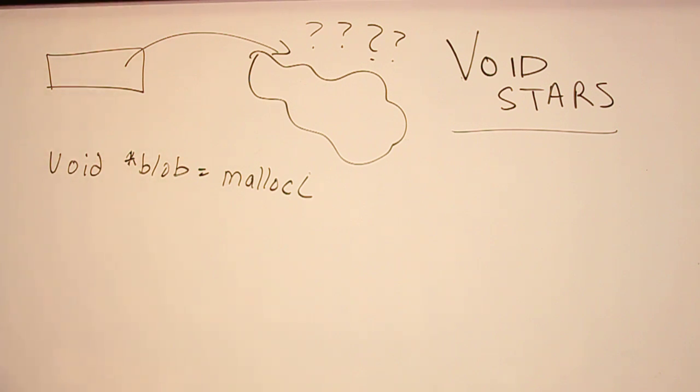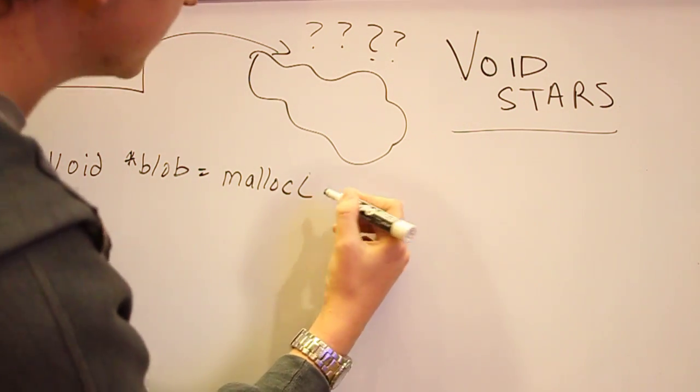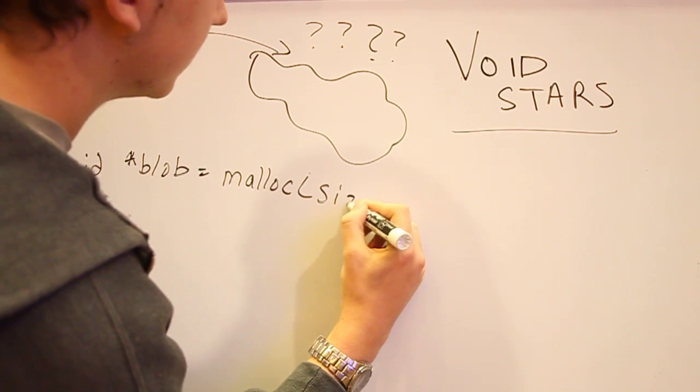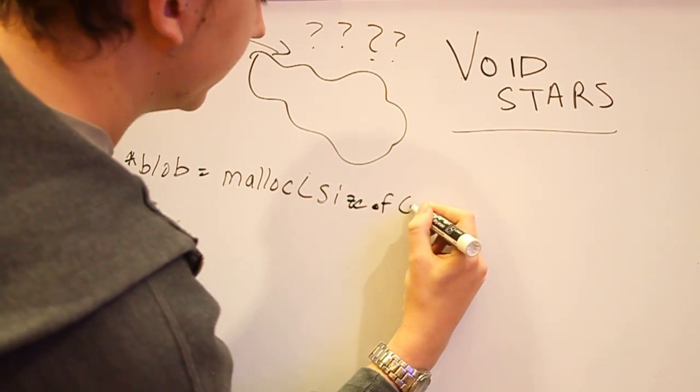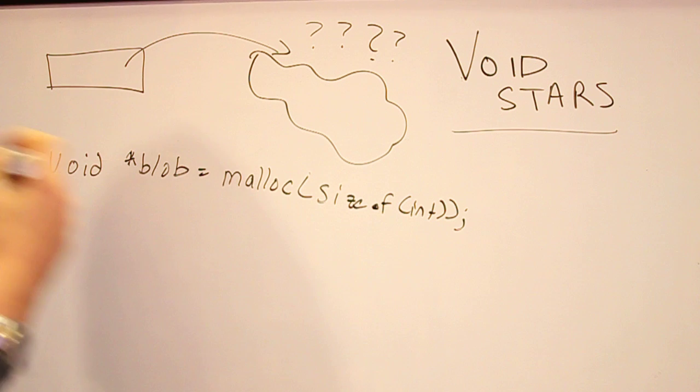This is similar to if you've ever used C++ new, but it's more hardcore. So, we malloc the size of an int, which is four bytes. So, now, we have four bytes out there in the heap somewhere.